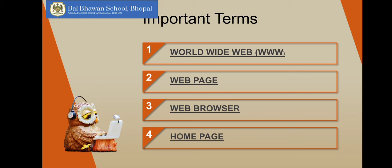Next is web page. It is a single page on a website that contains information in the form of text, graphics, sound, or video. Then we have web browser — it is a software that is used to open web pages and websites, meaning it helps us to use or search the internet. Home page is the starting page when you open any website — it is called the browser's home page. It is a type of web page, but it is the first main page of any website.